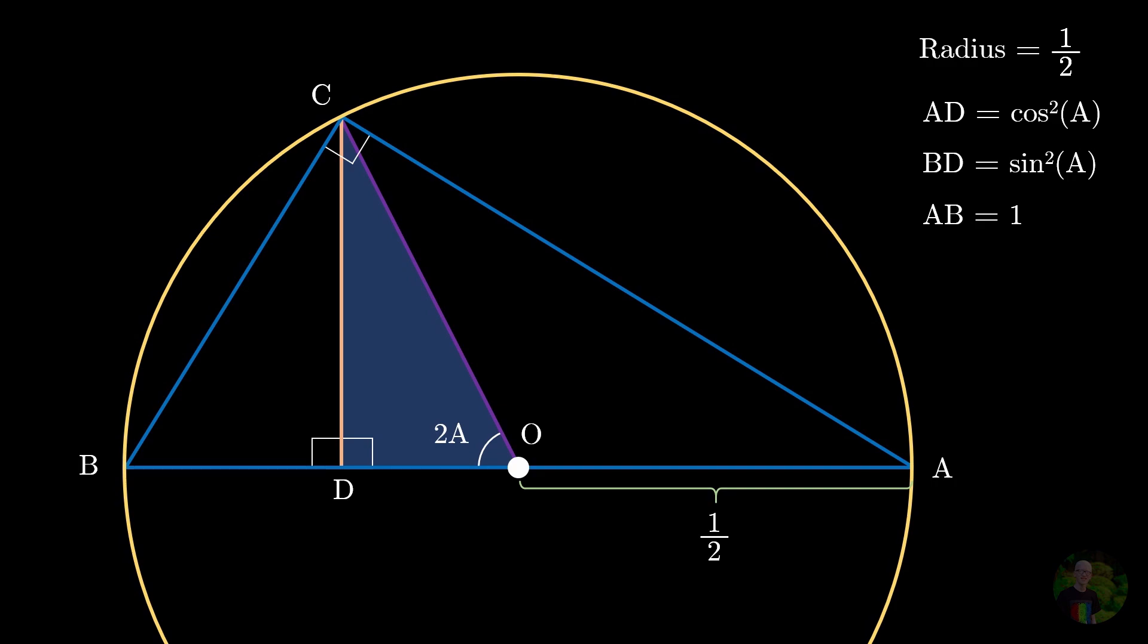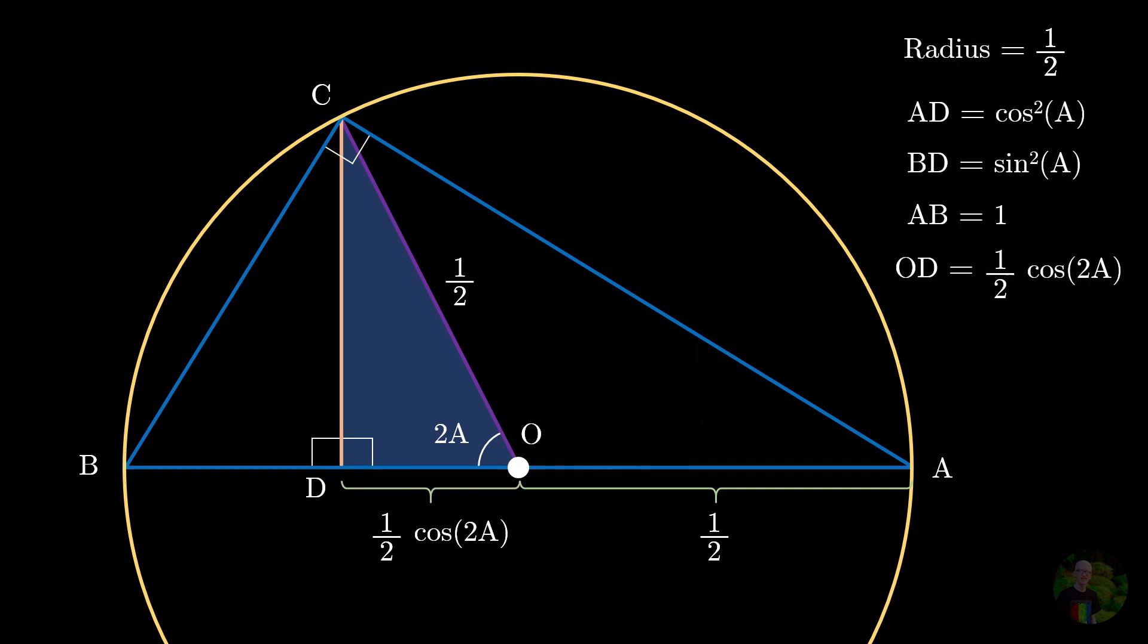And for this triangle, hypotenuse is the radius, which is again 1 half. And taking the reference angle as angle 2A, we can say that cos 2A is base divided by the hypotenuse. Again, the hypotenuse is 1 half, so the base OD is 1 half cos 2A. We will keep that in mind as well.